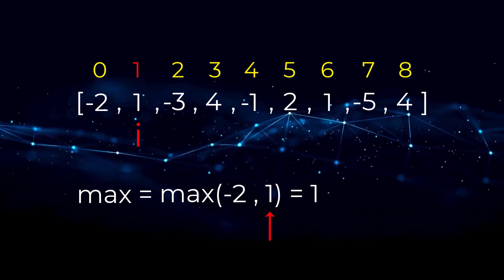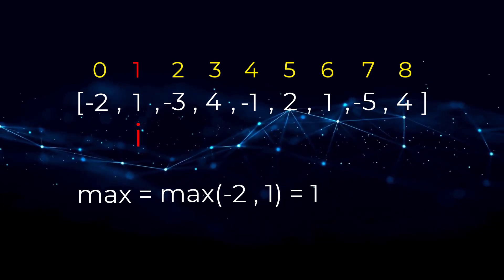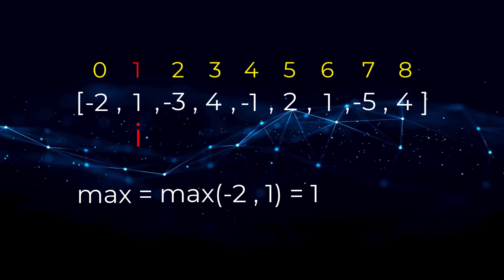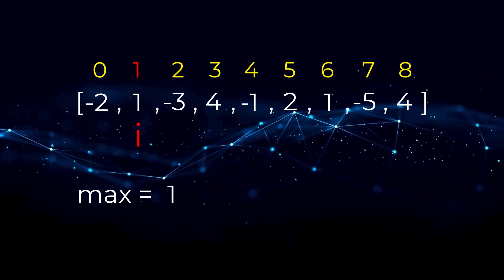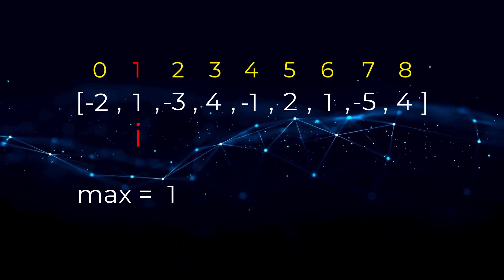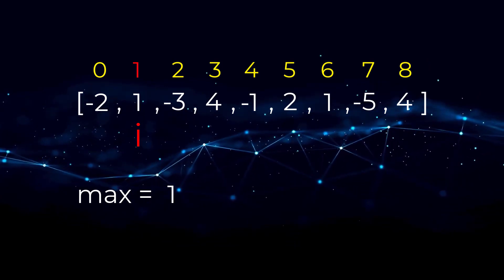Now we compare our current max with the current value our pointer is looking at. One is greater than our current max of negative two, so one becomes our new max. What this is saying is one is our max subarray so far.